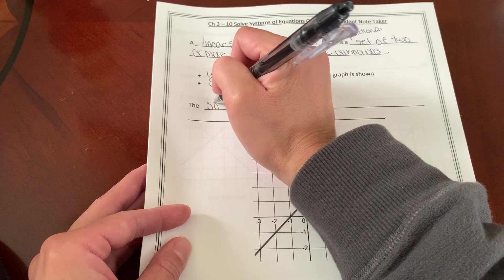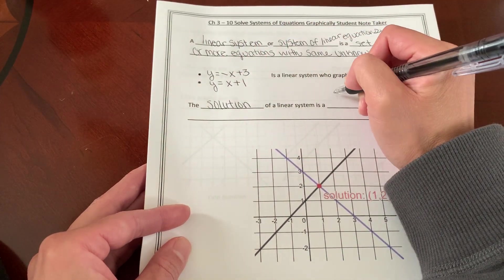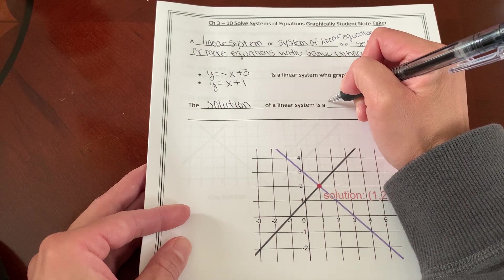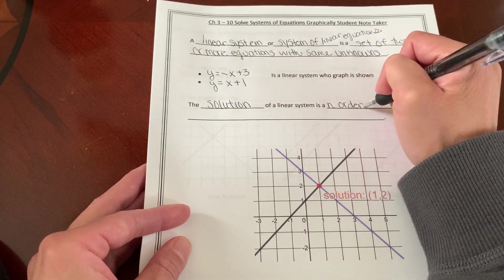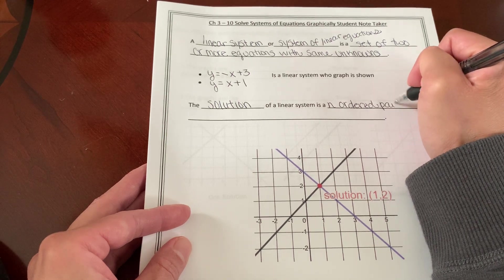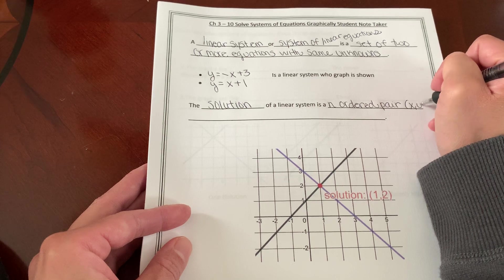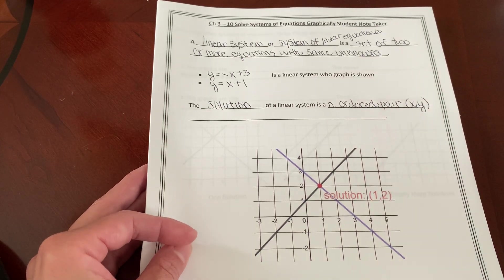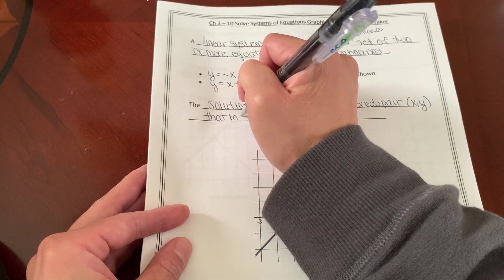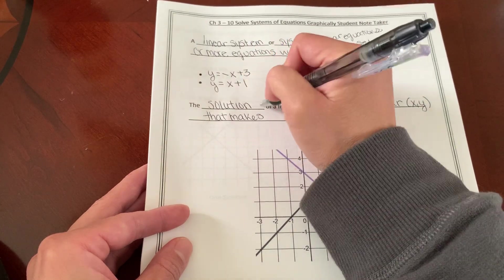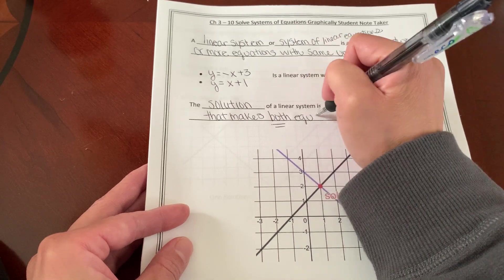The solution of a linear system is an ordered pair, which is x and y, because that's how ordered pairs are always written, that makes both equations true.